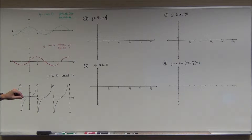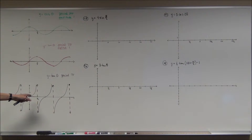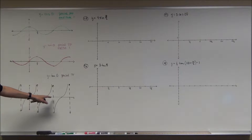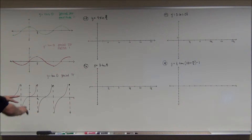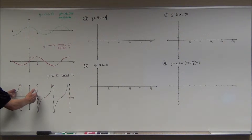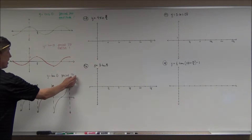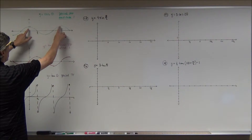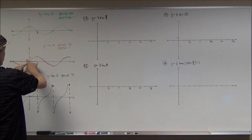With tangent, because tangent is sine of theta over cosine of theta, there are possibilities that your denominator can be zero. In brown I've drawn some dotted lines — those are vertical asymptotes at π/2, 3π/2, 5π/2, negative π/2, and so on forever. Also notice that you get a complete cycle in π.